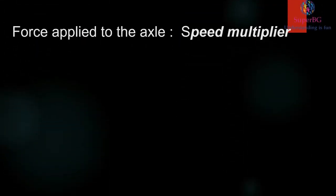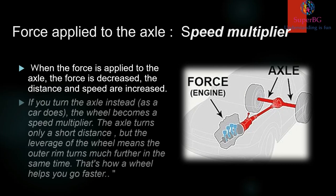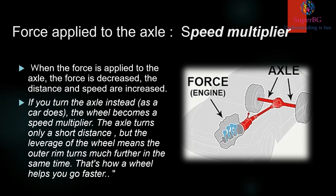When the force is applied to the axle the forces decrease. The distance and speed are increased. If you turn the axle instead as a car does, the wheel becomes a speed multiplier. The axle turns only for a short distance. But the leverage of the wheel means the outer rim turns much farther in the same time. That's how a wheel helps you to go faster.